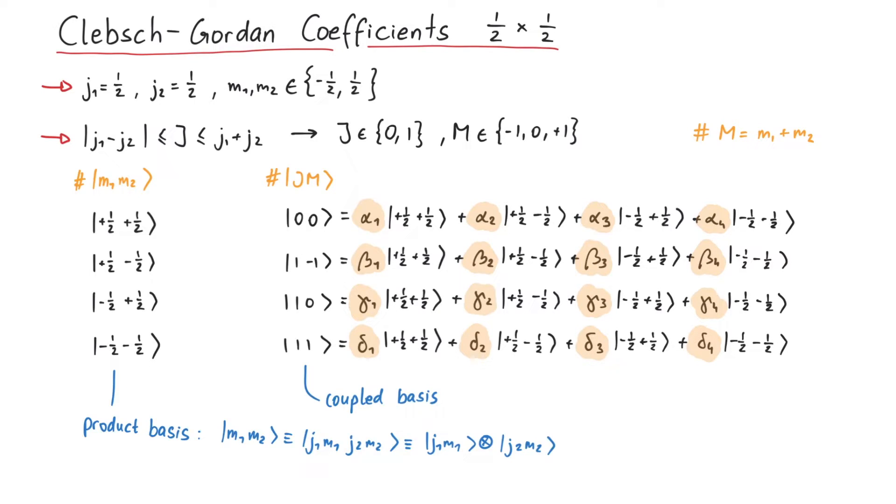Since M1 plus M2 must be equal to uppercase M, we know that the plus one half plus one half state of the product basis must be uniquely linked to the one one state of the coupled basis, since those states are the only ones where uppercase M is equal to plus one. Similarly, minus one half minus one half can be uniquely identified with one minus one. So the number of coefficients get reduced by 10.